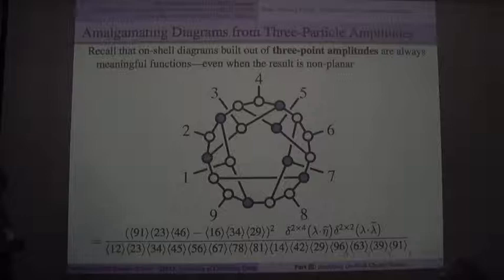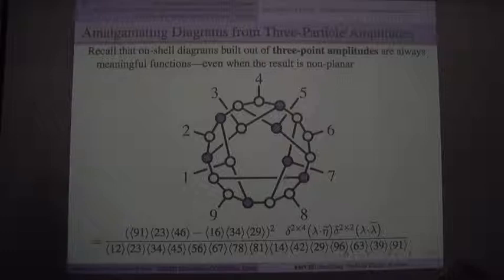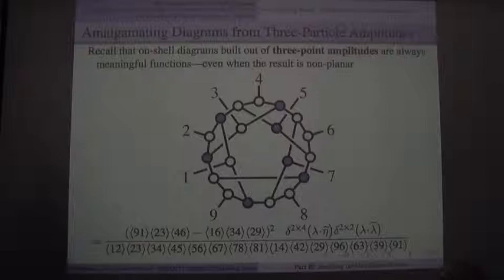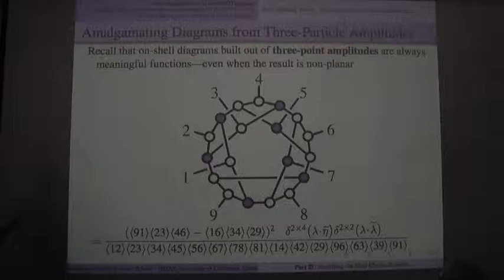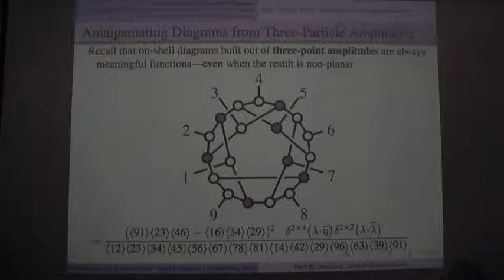Because the three-point amplitudes are fixed to all orders of perturbation theory, this meaning is meaningful. You can think about this as a cut of some multi-loop amplitude, but I hope I've convinced you that these deserve to be thought of as building blocks for quantum field theory. In the middle third of this lecture, we'll see how to go directly from a picture like this to a formula like this, without the laborious work of multiplying all the vertices together and integrating over the on-shell phase space.